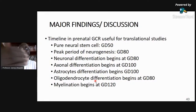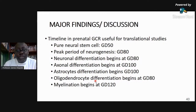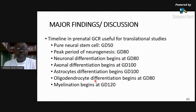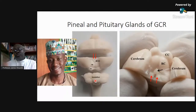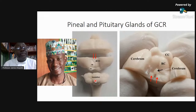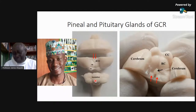Our major finding was that you can harvest pure neural stem cells by day 50, peak neurogenesis is around day 80, neuronal differentiation is around the same time, axonal differentiation around day 80, and myelination around day 120. Remember the gestation period is about 150 days. We then had a new master's student join the lab to move into the adult greater cane rat. We decided to study the epithalamic glands: the pineal gland, the epiphysis, and the pituitary gland, the hypophysis. This was Gilbert's work rounding up his master's.